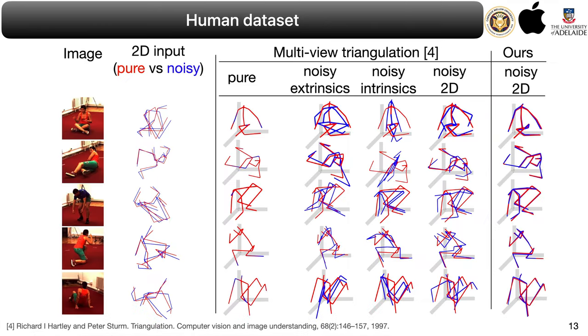Demonstration of our method on Human 3.6 Million, a human body dataset. From the qualitative 3D reconstruction analysis, we find that our method is robust to both 2D keypoints and calibration noise.